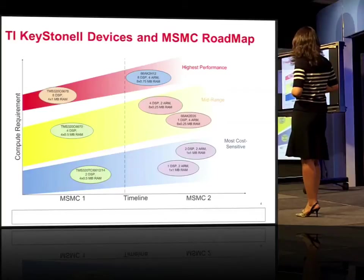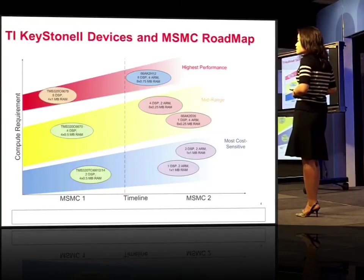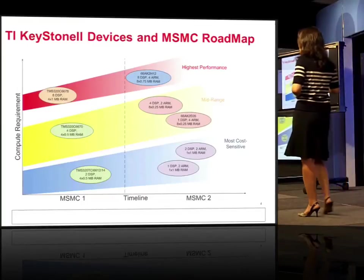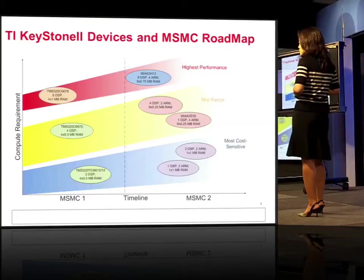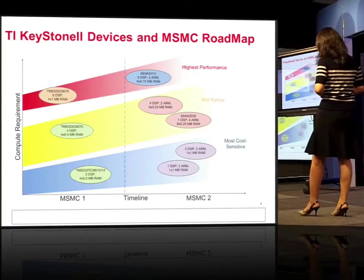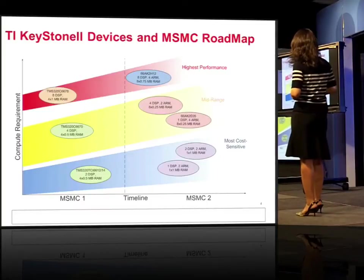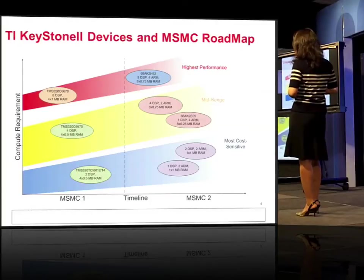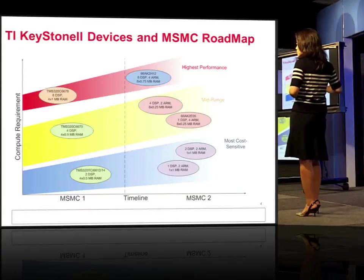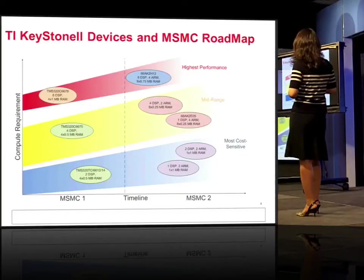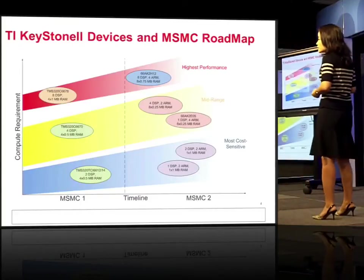I'm mainly going to focus on MISMIC 2, because MISMIC 1 is the generation that has multi-DSP cores, and MISMIC 2 adds ARM in the picture with coherence and all those features. Keep in mind that in the MISMIC roadmap, we've always designed with configurability in mind to support tiers of devices — high performance, middle range, low performance, and high efficiency.